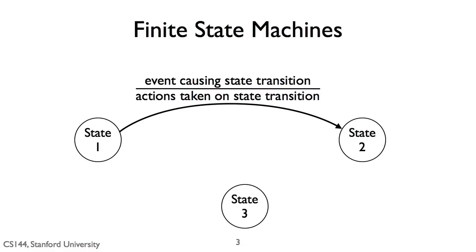If the system is in a state and an event arrives for which there is no transition described, then the behavior of the FSM is undefined. There can be multiple transitions from a single state. Here we have a second transition from State 1 — a different event that will take the system into State 3. For any given state, the transition for an event must be unique. You can't have the same event associated with both transitions, otherwise the transition is ambiguous — would you be in State 2 or State 3? The system can only be in one state.